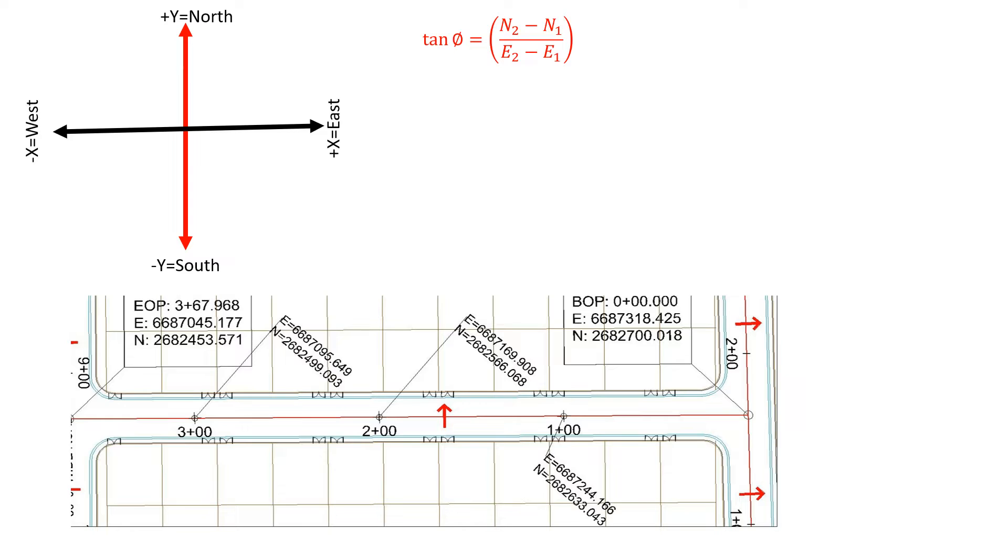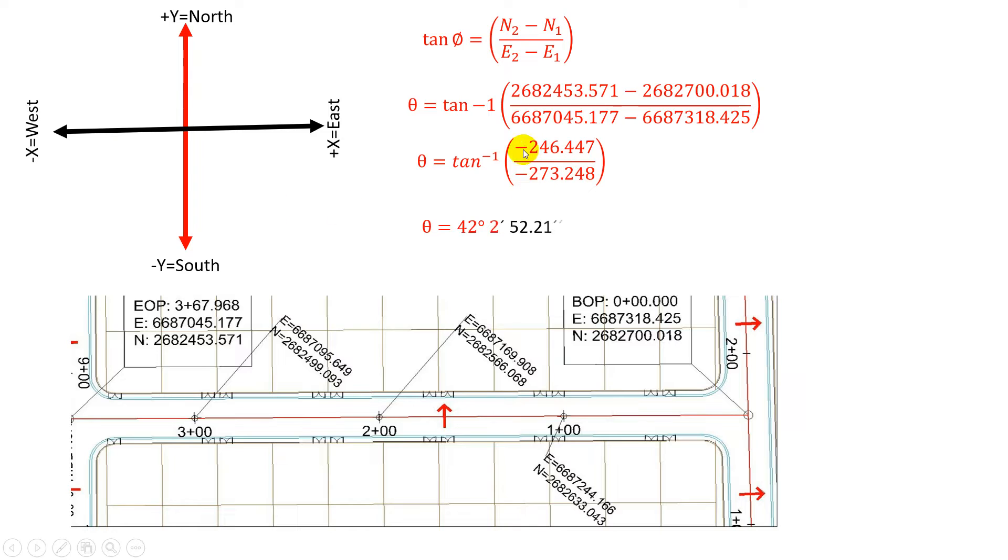We just try to start the manual calculation. We have here N2, the last coordinate north, and N1 is the first coordinate. Similarly, E2 is the last coordinate and E1 is the first coordinate. Now we put the values: N2 coordinate and N1 coordinate. N2 is this, N1 is this, E2 and E1, the last coordinate E2.